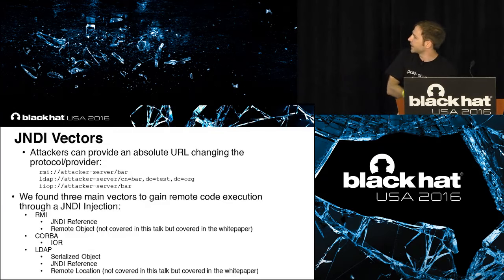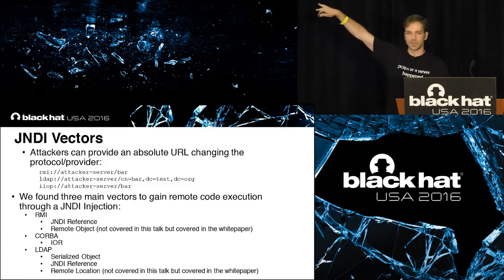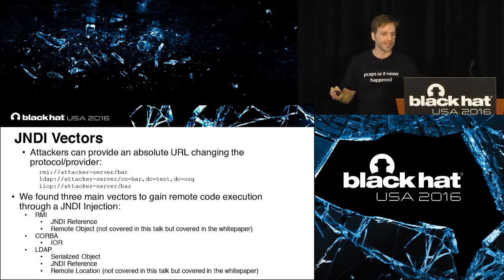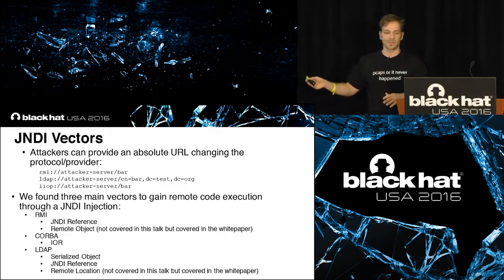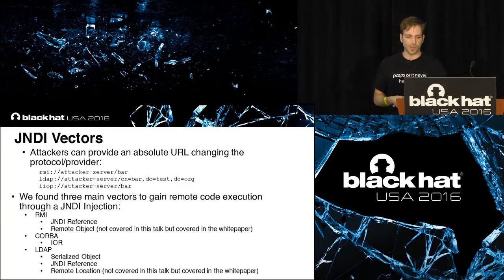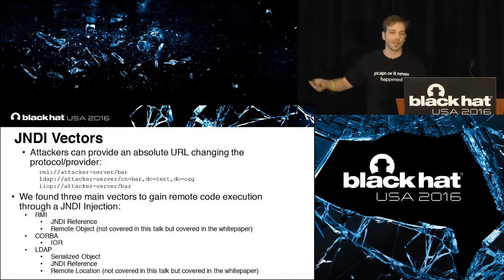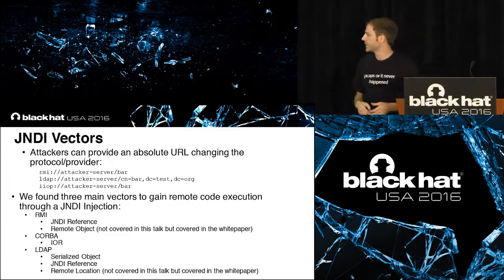Attackers can use different protocols — JNDI can interact with RMI, LDAP, CORBA, and others. By providing URLs pointing to attacker-controlled servers, they can exploit JNDI injection using any of these protocols. We found that three allow remote code execution: RMI through JNDI references or remote objects; CORBA through interoperable object reference parsing; and LDAP through serialized objects, JNDI references, or remote locations. Details on the LDAP vector and RMI are covered in the white paper released today.